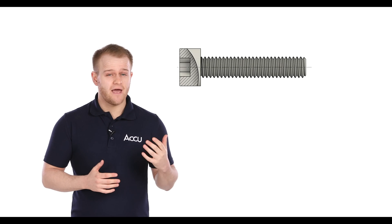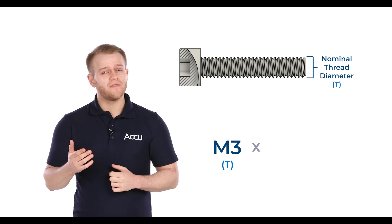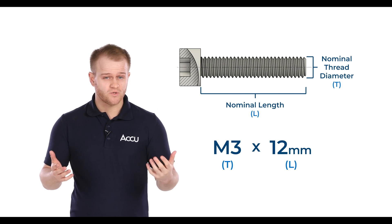The way screw sizes are written follows a standard format. The thread diameter comes first such as M3 followed by the nominal length of the screw such as 12 millimeters.